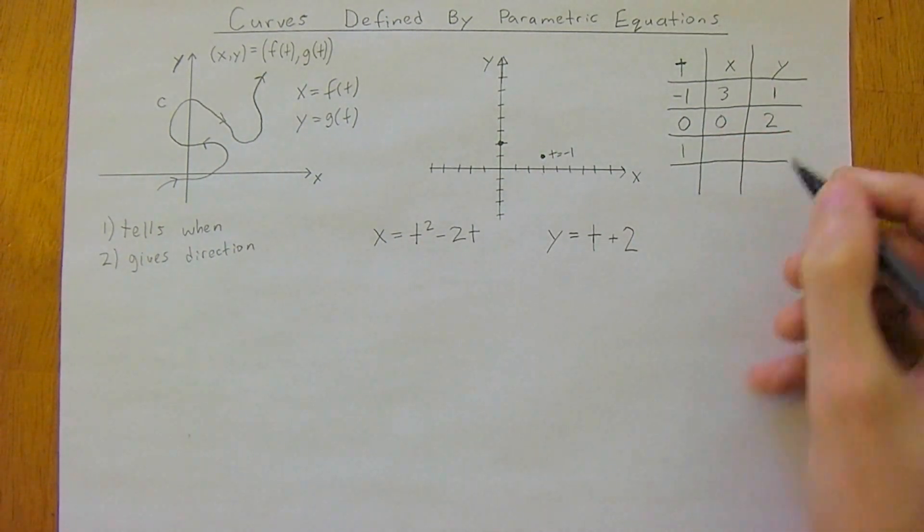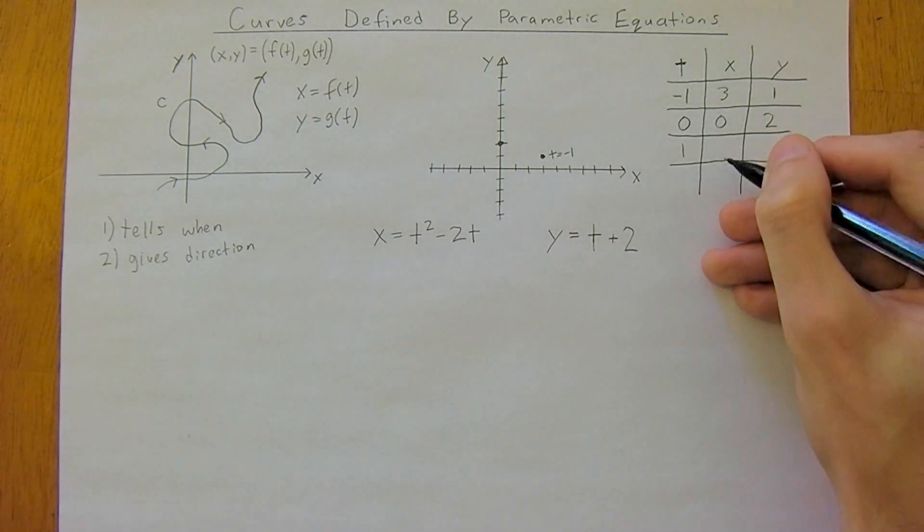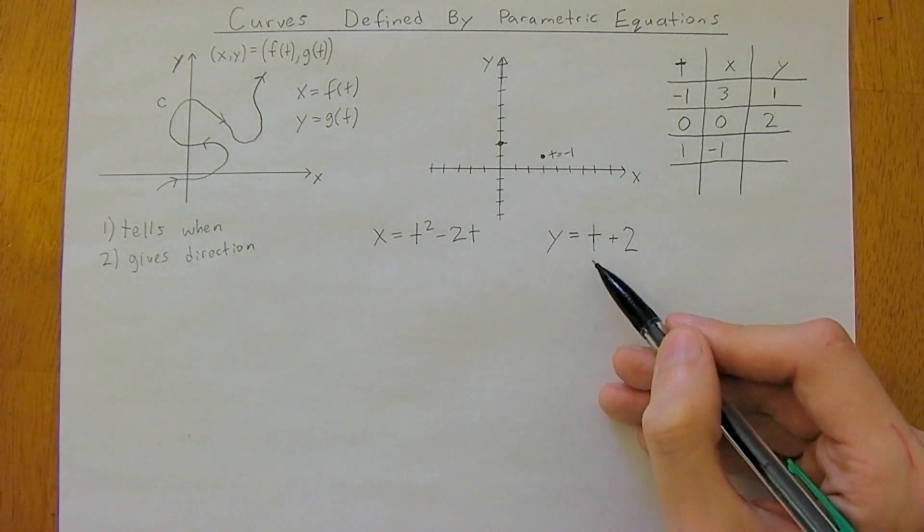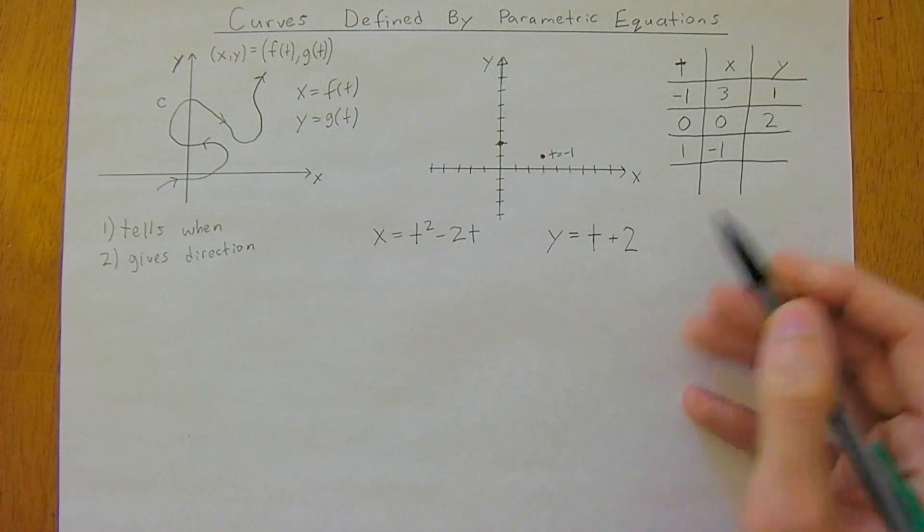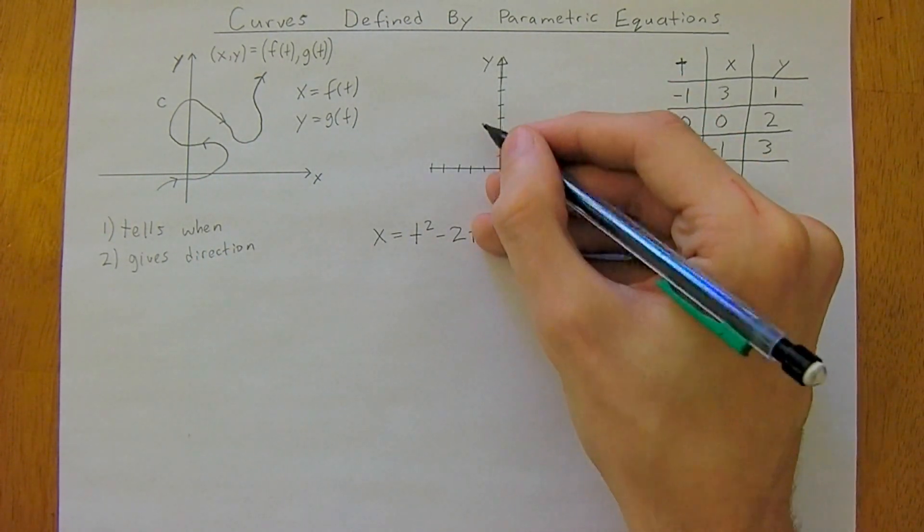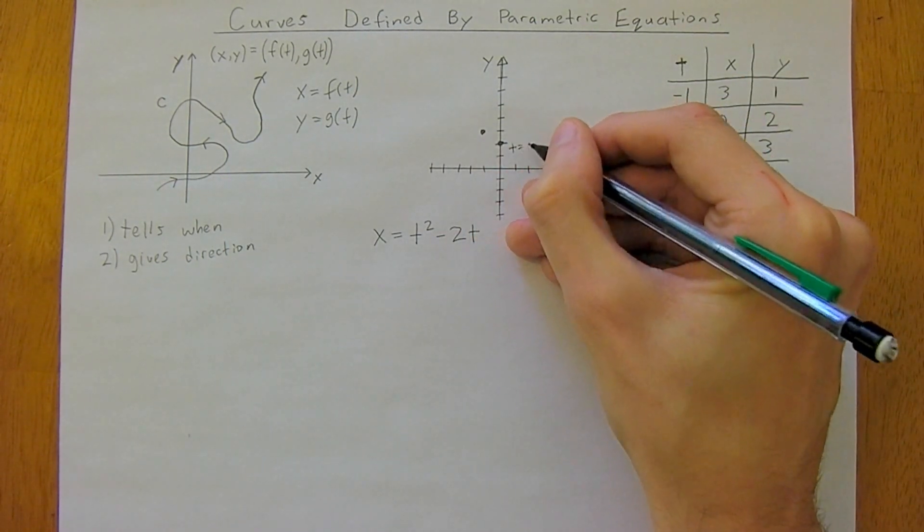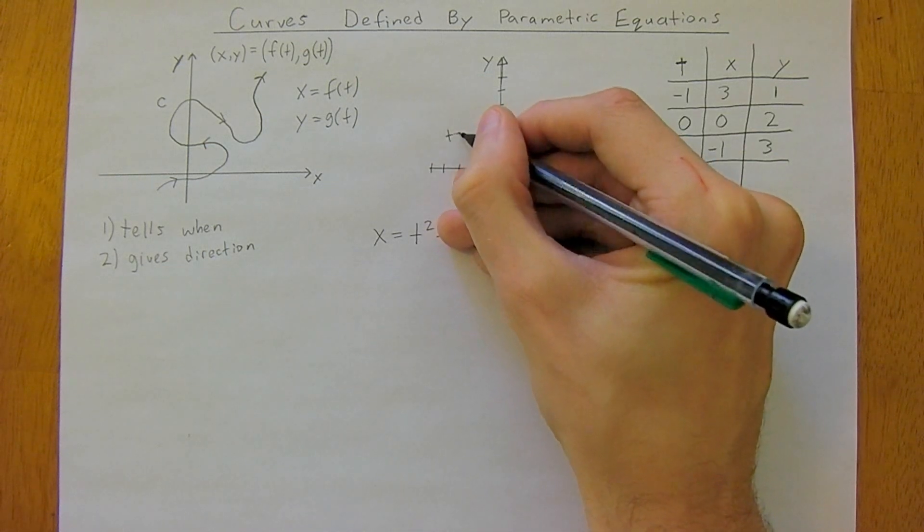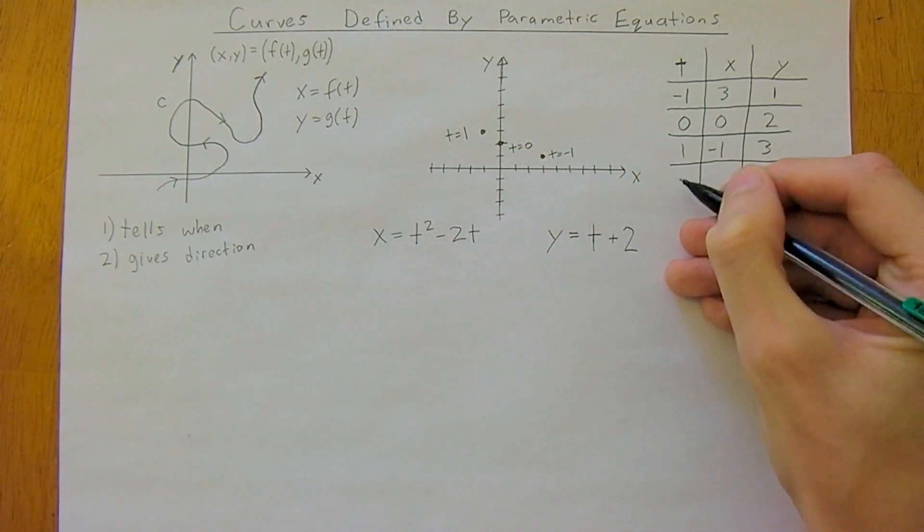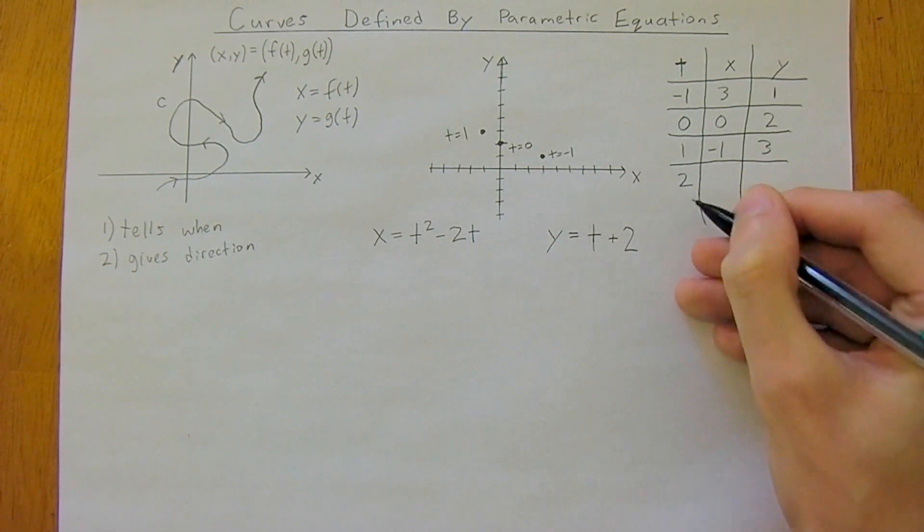We're going to get a few more. At t equals 1, we have 1 squared minus 2, so we've got negative 1 for the x coordinate. 1 squared minus 2 times 1, and 1 plus 2, so we have 3 for the y coordinate. So negative 1 and 3. This is at t equals 0, and this is at t equals 1.